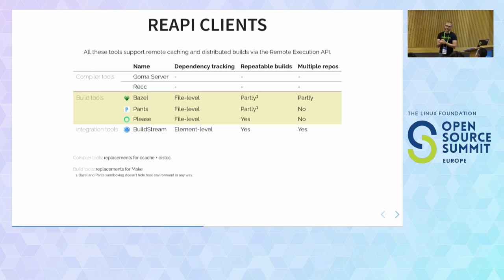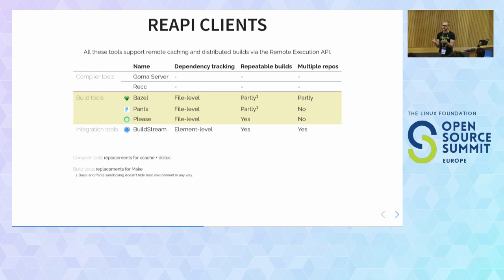These tools are all designed around the idea of a mono repo — all your source code in one big version control repo. If that's how your company works, great. But in the open source world we don't generally work like that, and integrating a project with lots of dependencies using Bazel can be a headache because each third-party dependency needs to be declared for Bazel to understand it. Also, if you already have a build system, you need to rewrite it. Want to build GCC with Bazel? Good luck — you'd first have to rewrite 20,000 lines of automake and autoconf.